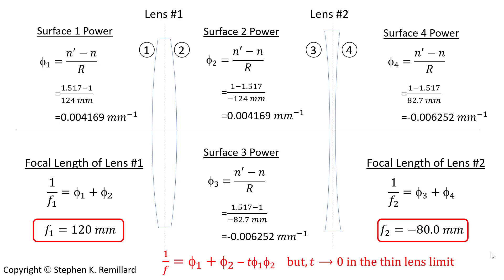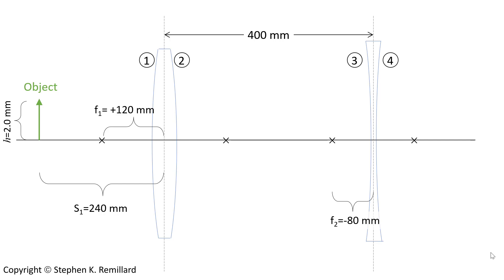Taking those computed focal lengths and putting them back in the diagram, we place x's on the optic axis where the focal points reside. The object is 240 millimeters to the left of the converging lens and has a height of 2 millimeters. It's common in optical ray diagrams to have a different scale for the vertical and horizontal. Drawing rays: a ray from the tip of the object parallel to the optic axis will go through the focal point of the converging lens after the lens.